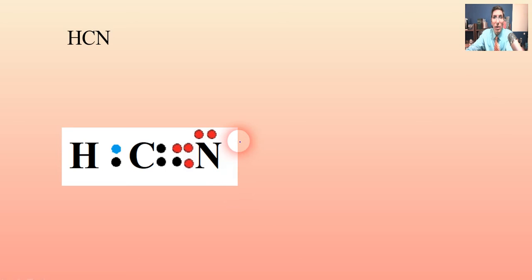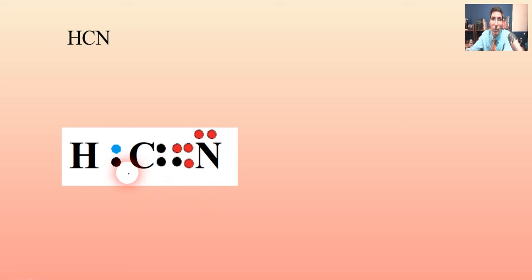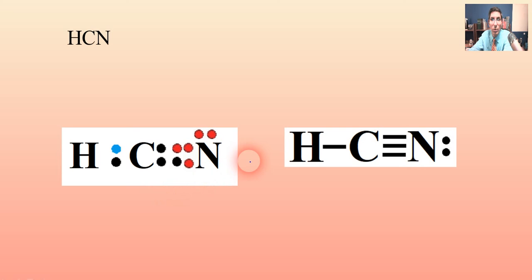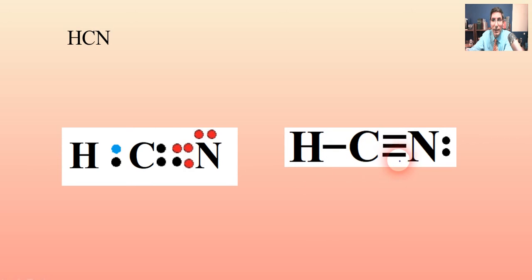Now both the carbon and the nitrogen have eight, and the hydrogen has two. So when I draw this a little more organized, we have our Lewis electron dot diagram for hydrogen cyanide, HCN.